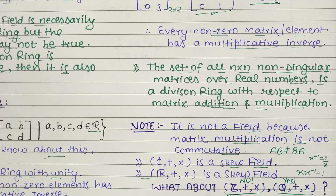Because ℚ also has commutativity, it forms a commutative ring — so ℚ is actually a field as well. That was our short concept of skew field. We covered both field and skew field. Skew field is also called a division ring. That's it for today. Thanks for watching, bye — we will see you in the next video.